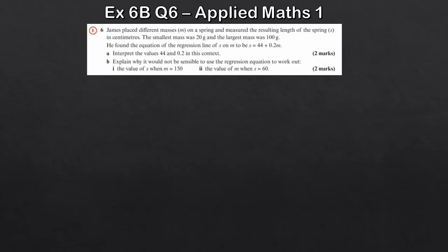So part A, we'll interpret the values of 44 and 0.2. And then part B, we need to give essentially two issues with the regression equation. So if we have a go to part A first, so interpreting the values, let's do the 44 first. So that's essentially what we're saying here, the 44 is where it cuts the y axis, and that y axis, that would be when M is 0. So essentially when we don't attach any mass, the length of the spring with no mass attached is 44 centimetres.